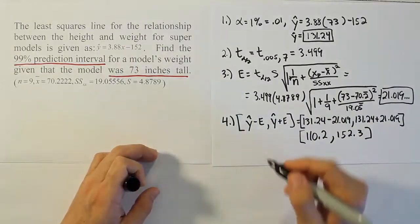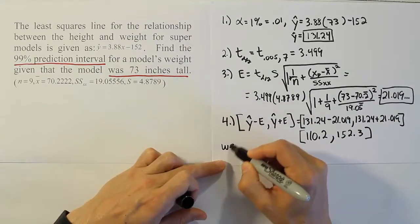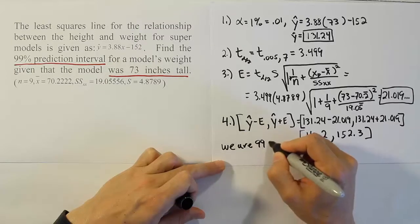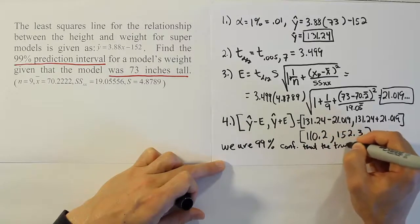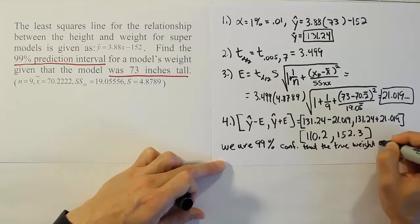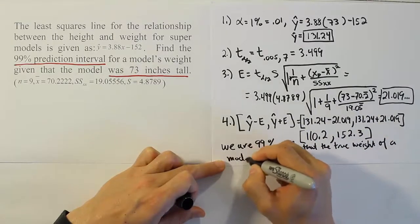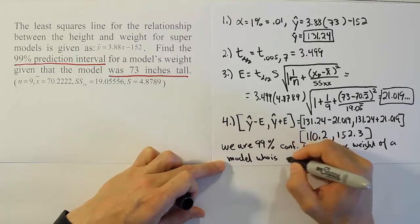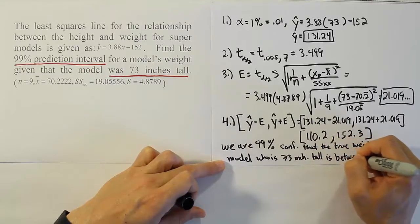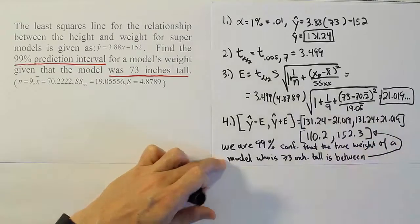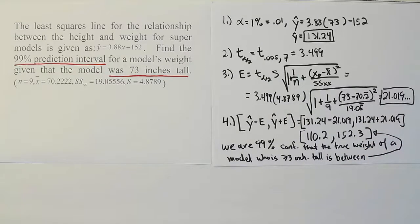What we're going to say for this problem is that we are 99% confident that the true weight of a model who is 73 inches tall is between 110 pounds to 152 pounds. We're not talking about the average weight for a model who stands 73 inches tall. We're talking about the true weight being somewhere inside this interval for a model who's 73 inches tall. We're 99% confident of that.